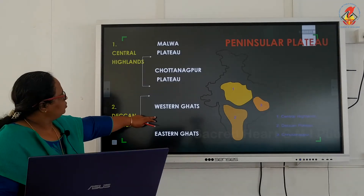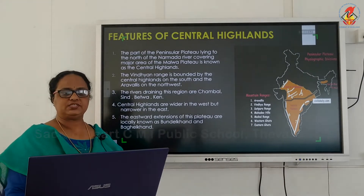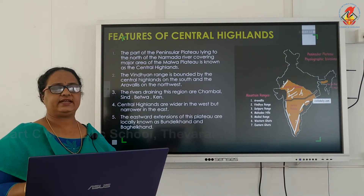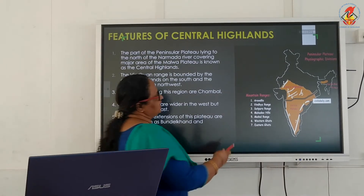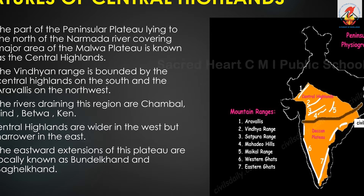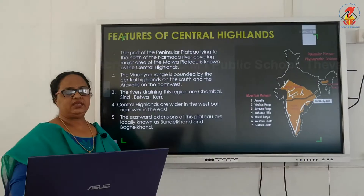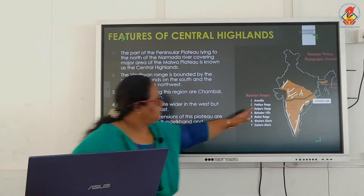The central highlands are the part of the peninsular plateau lying to the north of the Narmada river, covering the major area of the Malwa plateau. It is bounded by the Aravallis in the northwest and the Vindhya range in the south.